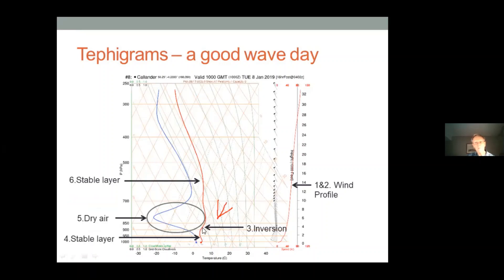For wave, we need an inversion — and here's the inversion on the chart. We're looking for the air temperature line sloping parallel to or even steeper than the temperature grid lines. And look where it is: about 3000 to 4000 feet — bang on the Scottish mountains. There's some dry air above, meaning there won't be too much cloud. Above that there's a stable layer, and a stable layer below it — so in the wave oscillation you won't kick off convection or thunderstorms.